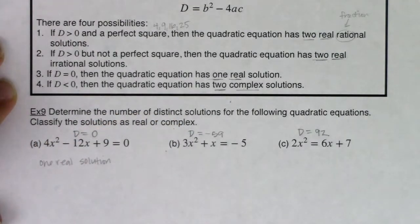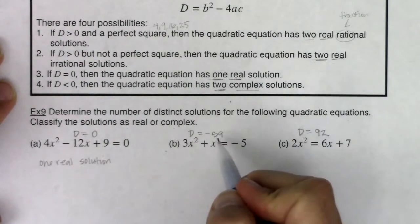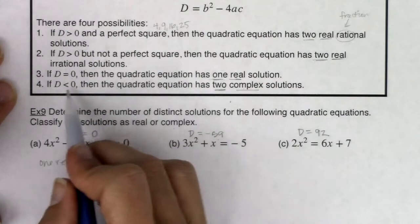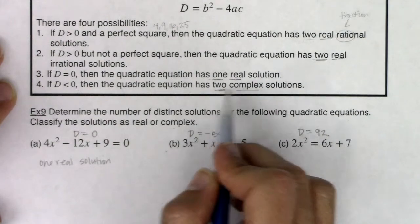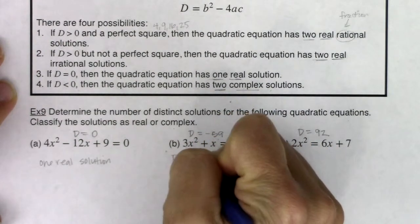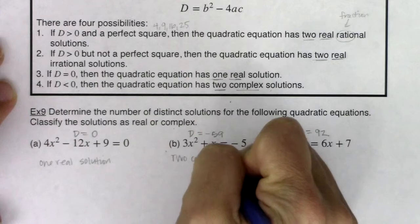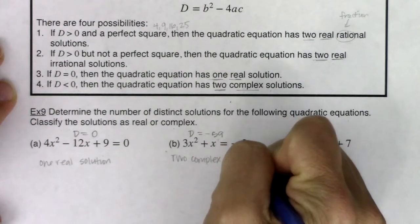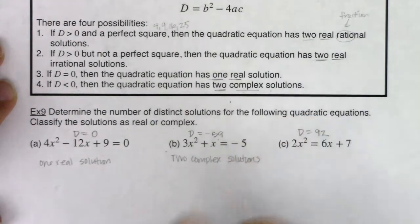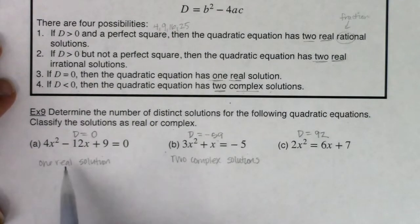If my discriminant is 0, then I know I'm going to have one real solution. If my discriminant is negative, which it is for part b, then I have two complex solutions. This means my one real solution is x equals negative b over 2a. Two complex solutions means I'll have some i's, some imaginary numbers - two solutions of the form a plus or minus bi.